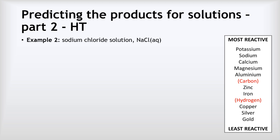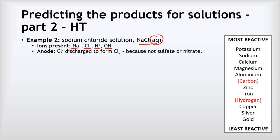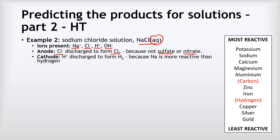Let's look at sodium chloride solution, NaCl(aq). The ions present are Na+ from the sodium, Cl- from the chloride, and also H+ ions and hydroxide ions from the water. At the anode, chloride will be discharged to form chlorine, because it's not sulfate or nitrate — which would form oxygen — so just the chloride gets discharged. At the cathode, hydrogen ions from the water will be discharged to form hydrogen gas, because sodium is more reactive than hydrogen. Sodium is right up high on the reactivity series compared to hydrogen — because sodium is more reactive, it's harder to discharge it, so hydrogen gets discharged instead.